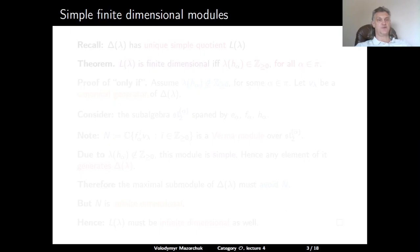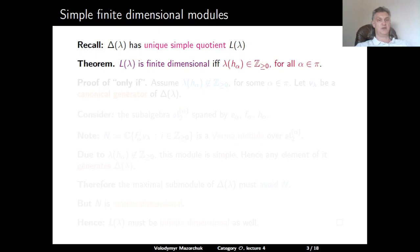Let's start today with the classification of simple finite dimensional G-modules. Recall that the Verma module Δ(λ) has a unique simple quotient, denoted L(λ). The main theorem states that L(λ) is finite dimensional if and only if λ(H_α) is a non-negative integer for each simple root α. Note that any simple finite-dimensional module is a weight module, it has a highest weight, so it is isomorphic to some L(λ).